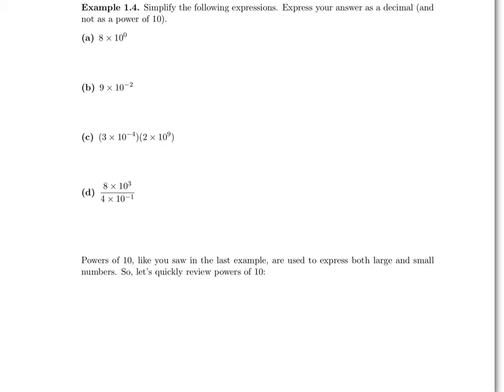Example 1.4: Simplify the following expressions. Express your answer as a decimal and not as a power of 10. Let's look at part A: 8 times 10 to the 0. Since 10 to the 0 equals 1, this is simply 8 times 1, which is 8.